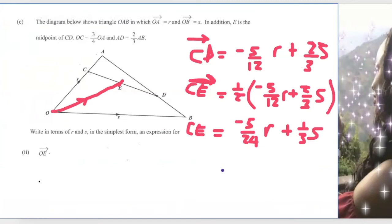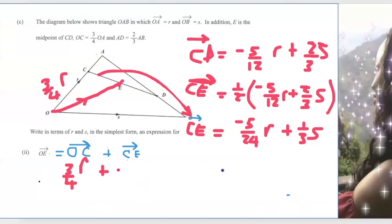So to find OE, OE is the same thing as OC plus CE. So we know that OC is three-quarters of R. And CE will be what we have here. So OE equals OC which is three-quarters R plus CE which is minus 5 over 24 R plus one-third S. So the R's are common, so I can simplify further.